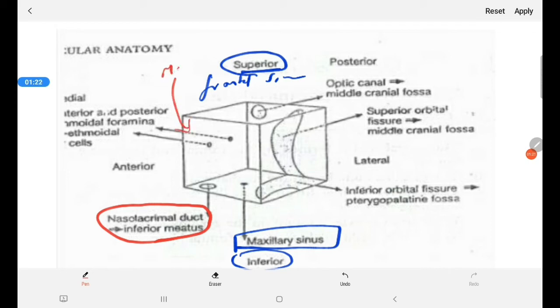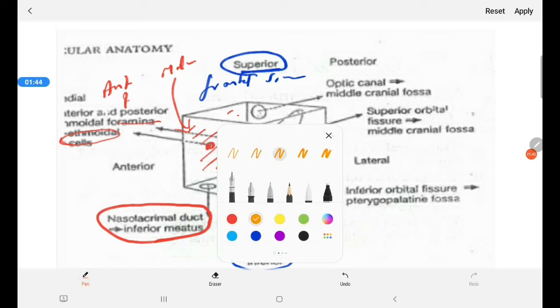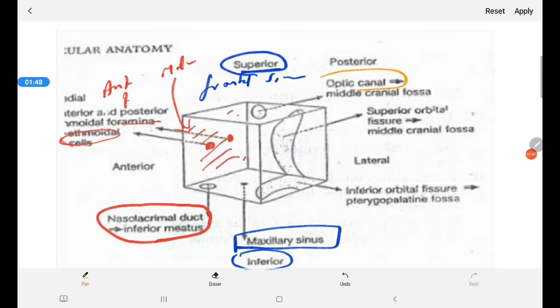This side is the medial wall. Here, we have the anterior and posterior ethmoidal foramina. That is this and this. In the posterior part, that is the optic canal that goes into the middle cranial fossa. There is also the apex of the orbit, which is called as the superior orbital fissure. Which is the apex of the orbit, which is formed between the greater and the lesser wing of sphenoid bone.